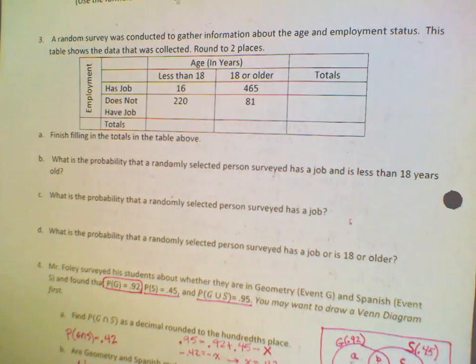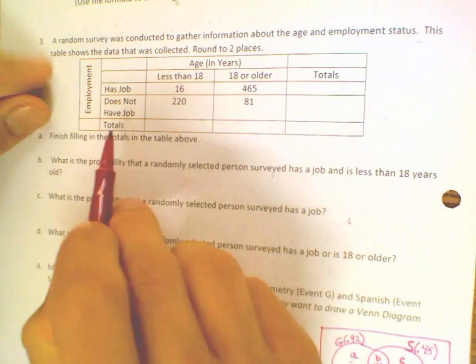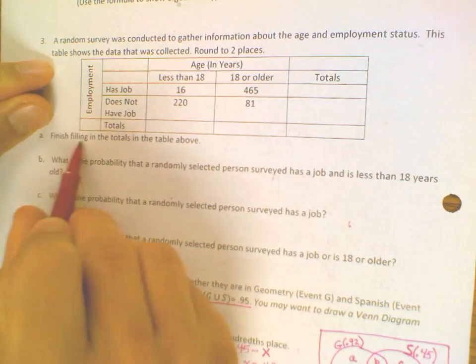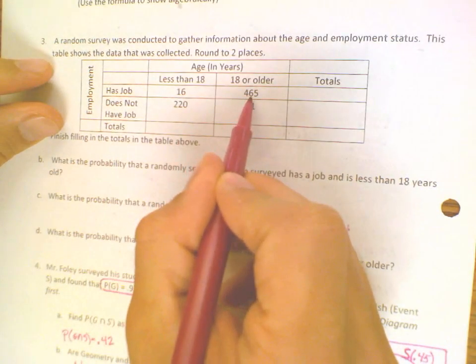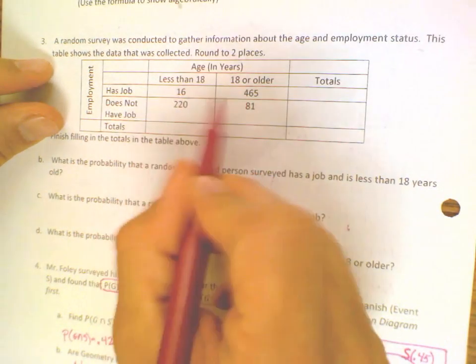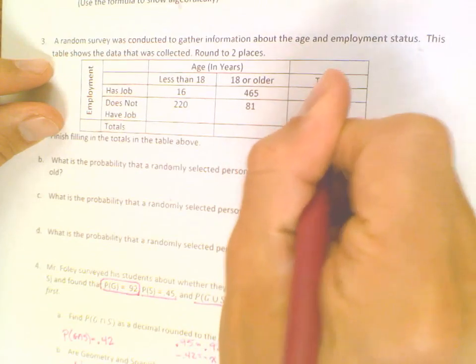Sometimes you're going to be given a contingency table, and the first thing you'll probably do is just finish filling in the totals. So we'll add 16 and 465, which is 481.